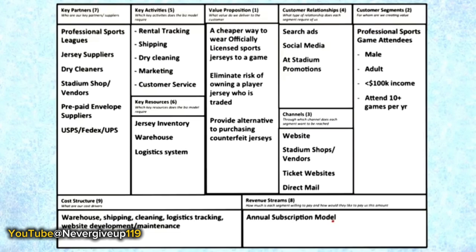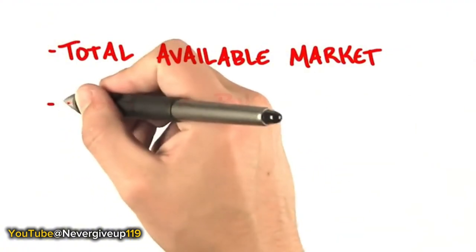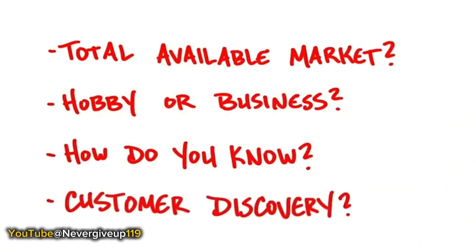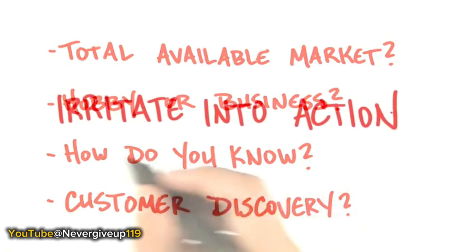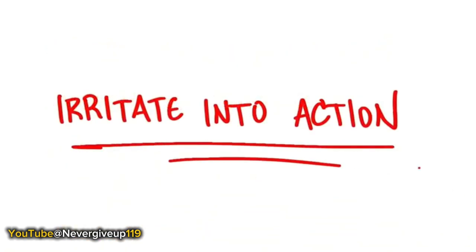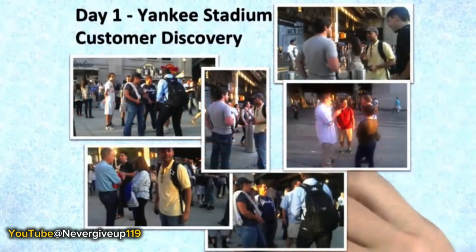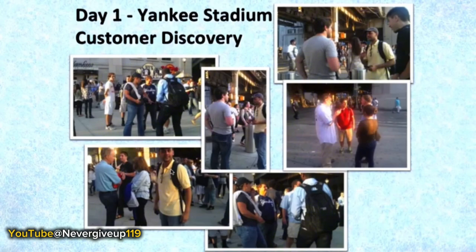When we looked at their day one canvas, the teaching team first said we don't even believe there's a market here. What's the total available market? Is this a hobby or a business? And did you do any real customer discovery? Our skepticism infuriated these guys who thought they were domain experts because they wore a lot of jerseys. Teaching team — this is your job: you want to irritate them into action. We did this on purpose to get them to come back on the first day with enormous proof that this was even worth their time. And they did it — they went out to Yankee Stadium in New York and found the densest area of potential customers and spoke to 60-some-odd customers just to prove to us what idiots the teaching team was — by design.